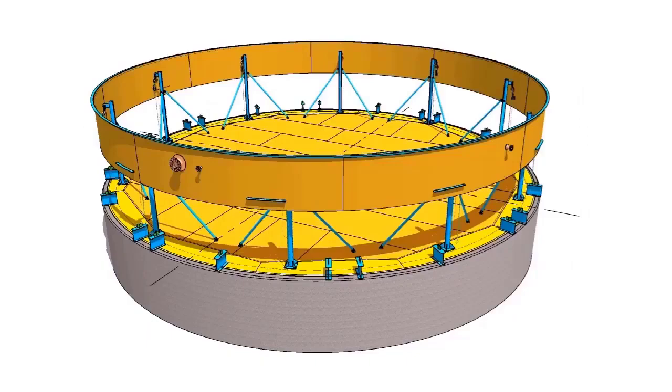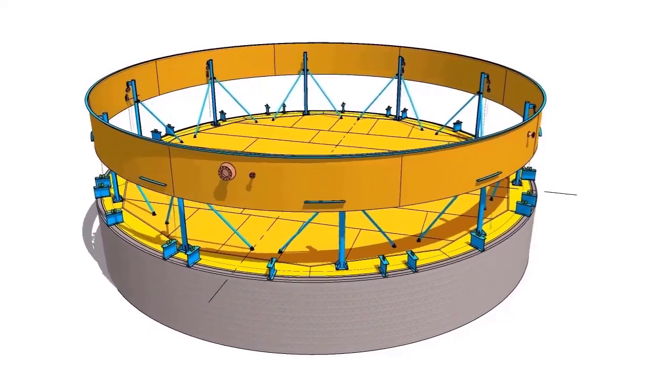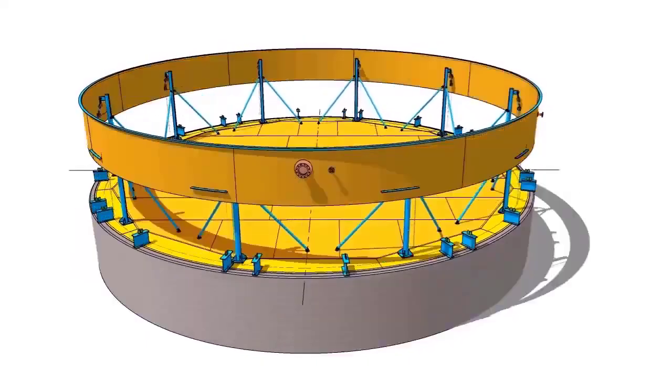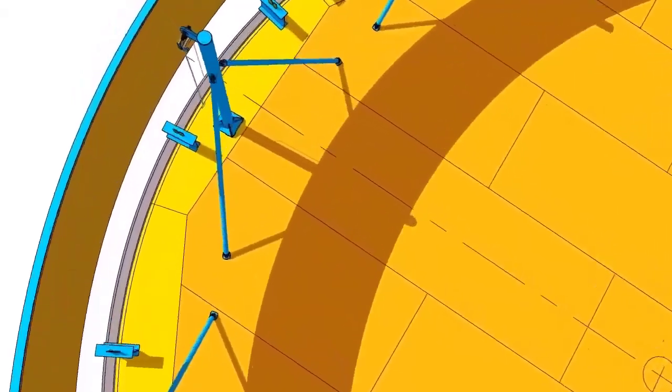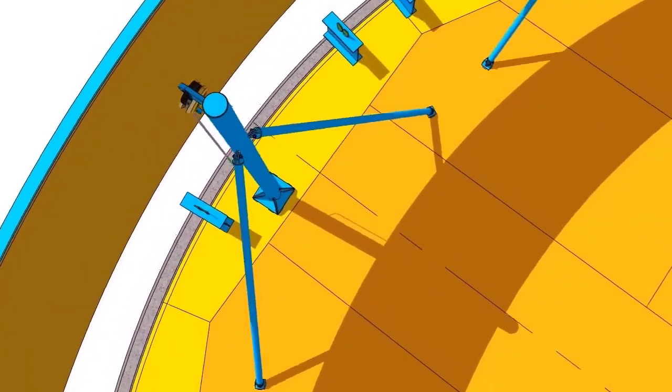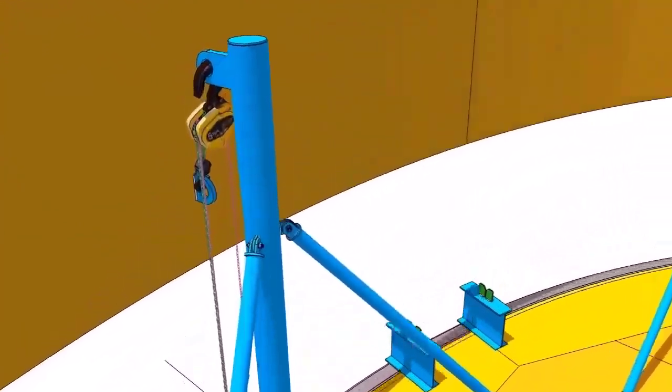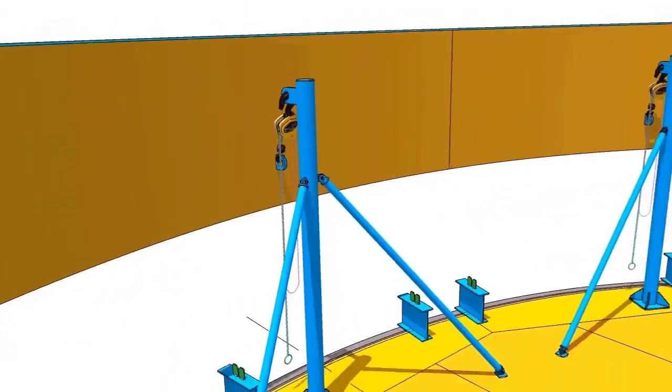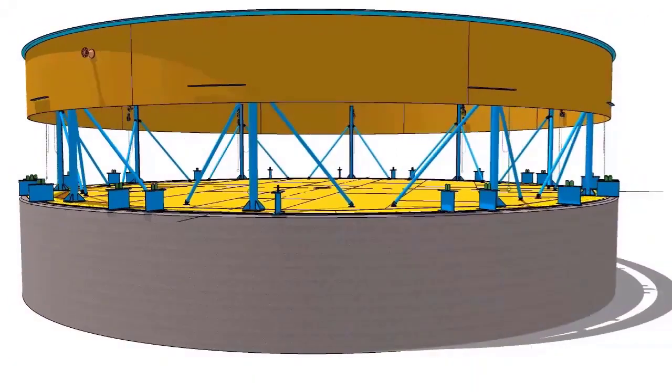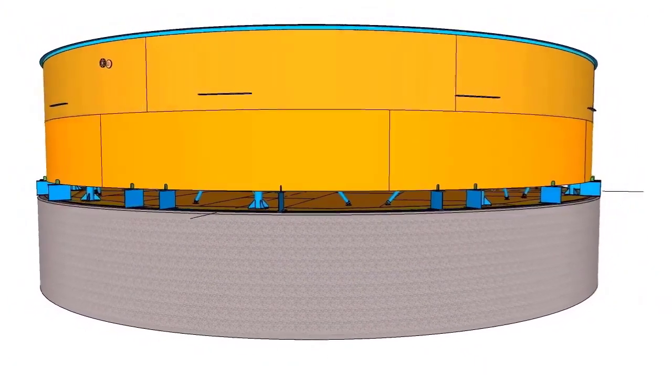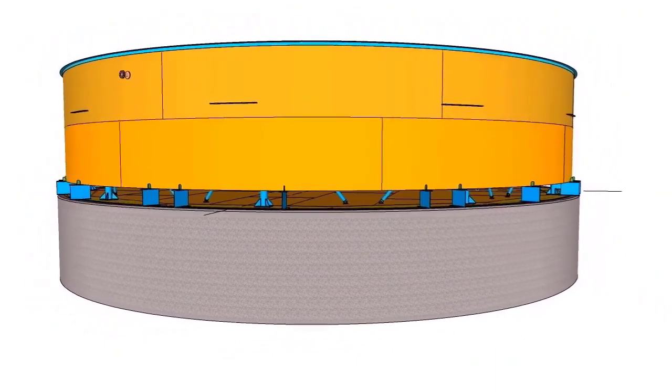Complete the welding of the roof structure, curb angle, shell, etc. Lift the shell to the required height. Install the next shell course. Complete the welding.